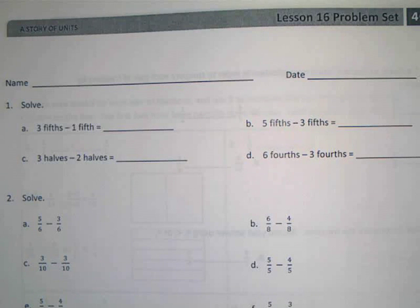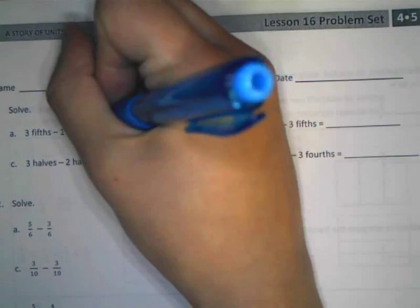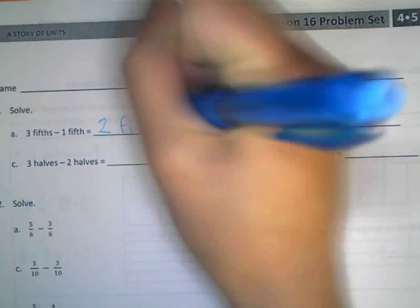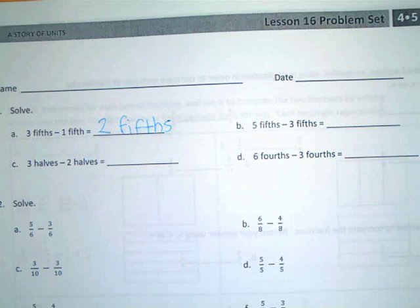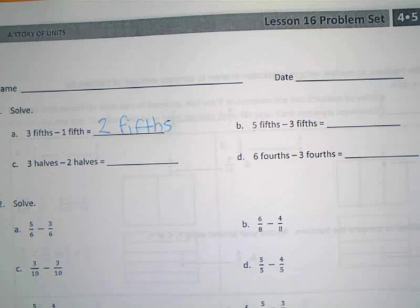All right, it just says solve, so can we figure these out pretty easily? Yes. Let's see, three-fifths take away one-fifth. Two-fifths. Two-fifths. So we aren't going to write it as a fraction, we're just going to write it the same way that they wrote it.